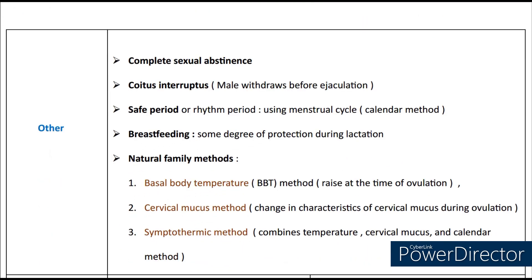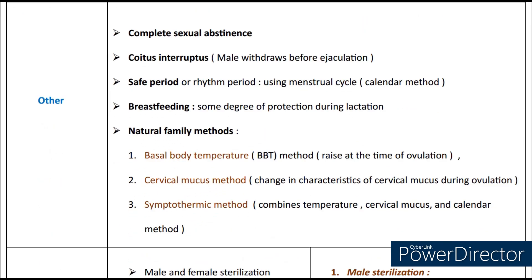Other forms of contraception include complete sexual abstinence, coitus interruptus (also called the male withdrawal method), and the safe period or rhythm method using the menstrual cycle, also called the calendar method. Breastfeeding provides some degree of protection during lactation. Other natural family planning methods include the basal body temperature (BBT) method, where rising temperature is observed during ovulation; the cervical mucus method, where there is a change in characteristics of cervical mucus during ovulation; and the symptothermic method, which combines the temperature method, cervical mucus method and the calendar method.